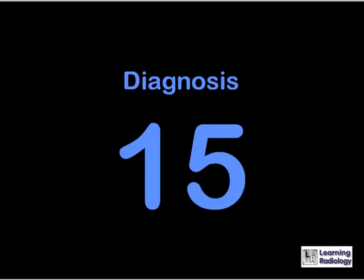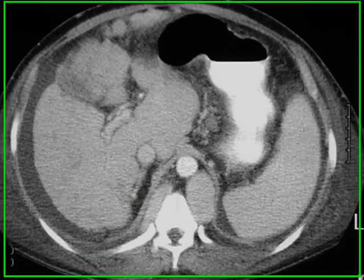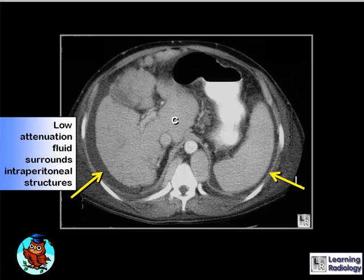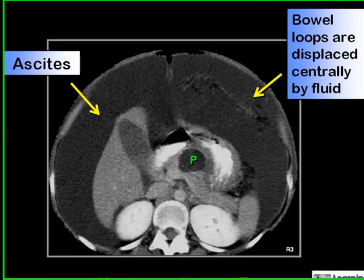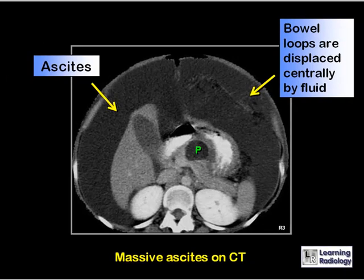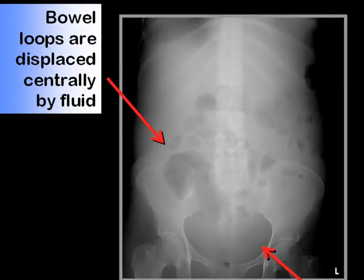This is Diagnosis 15, the last in this podcast. Why does this 47-year-old have increasing abdominal girth? There is low attenuation material surrounding the intraperitoneal structures such as the liver and spleen — this patient has ascites from cirrhosis, with an enlarged caudate lobe. Another example shows more massive ascites with bowel displaced away from the abdominal wall by the fluid, and the letter P represents a pancreatic pseudocyst in a patient with pancreatitis. On conventional radiograph, ascites may be recognized by displacement of bowel loops centrally in the abdomen.